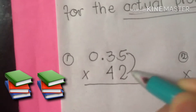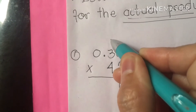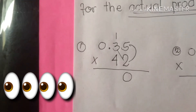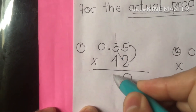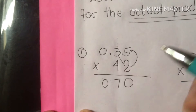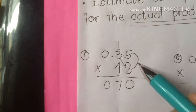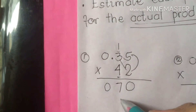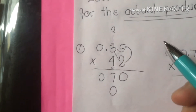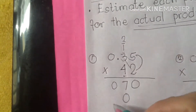5 times 2 is 10. So we're going to bring down 0, then regroup 1. Remember, in regrouping you must be careful. 3 times 2 is 6, plus 1 is 7. Next, 2 times 0 is 0. Then the second digit multiplier: 4 times 5 is 20, so bring down 0, regroup 2 above the 3. 3 times 4 is 12, plus 2 is 14. So we're going to write it here.